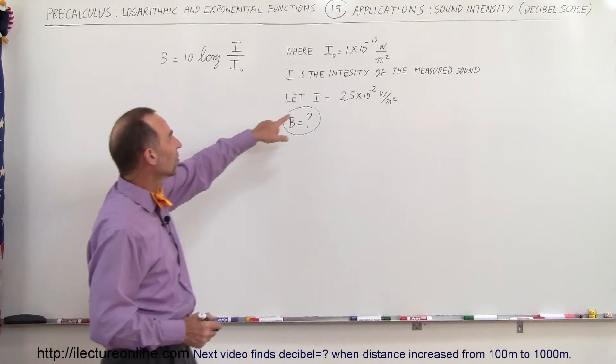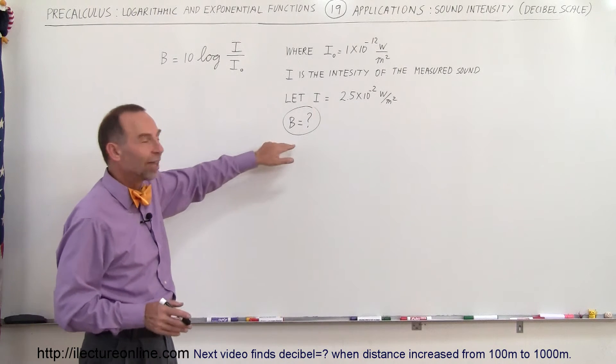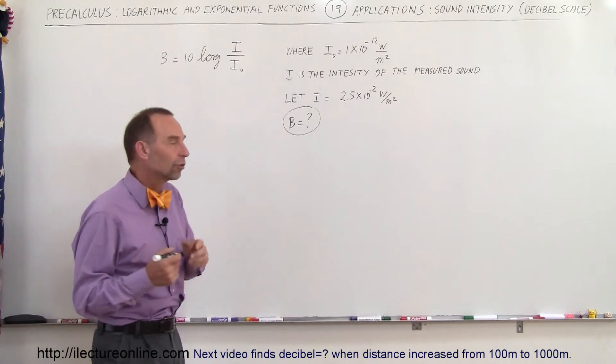So let's say that the intensity as measured is 2.5 times 10 to the minus 2 watts per square meter. What would be the sound intensity in decibels? So let's go ahead and find it.